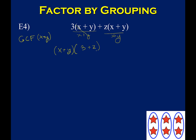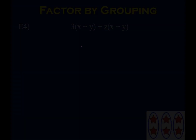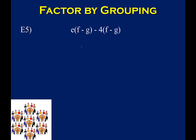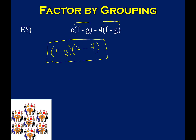I've now factored this further by removing that GCF. Part of factoring by grouping is basically removing a GCF twice, where the first GCF comes from just two terms instead of all the terms. Looking at another example: these two terms have a common factor of f minus g. If I remove that GCF — undistributing — I'm left with e minus 4. So this is now completely factored.